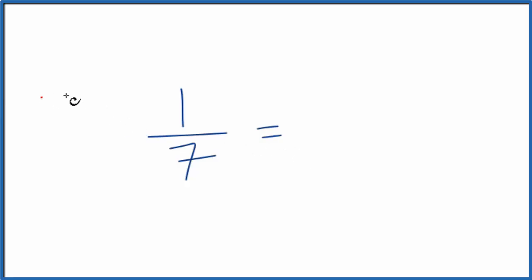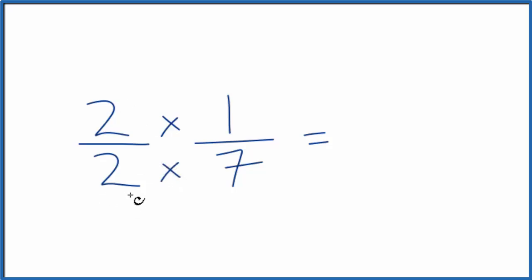But let's multiply it by 2 over 2. 2 divided by 2, that's 1, so we're just multiplying by 1. The value stays the same. But now, 2 times 1 is 2, and 2 times 7 is 14. So we have an equivalent fraction for 1/7.